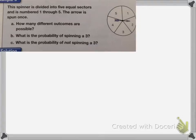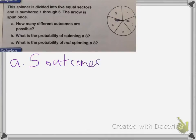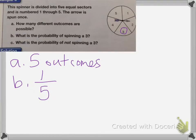On this one, we have a spinner divided into five equal sectors numbered one through five, and the arrow is spun once. How many different outcomes are possible? There are five equally likely outcomes, because it could land on any of those numbers. What's the probability of spinning a three? There's only one three on this spinner, so the numerator is one, and there are five numbers total, so the denominator is five. The probability of spinning a three is one-fifth.